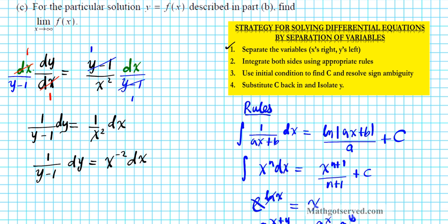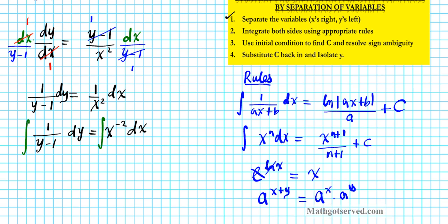Now we are ready to integrate both sides. Using the rational expression rule where A is 1, the antiderivative of the left side is the natural logarithm of the absolute value of Y minus 1. Using the power rule on the right, we get X to the negative 2 plus 1, which is negative 1, over negative 1, plus C — where this C is a combination of the constants from both sides, placed on the right side of the equation.